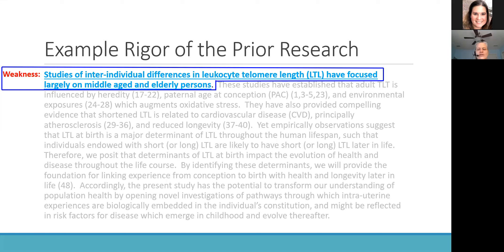They start off the paragraph with an inherent weakness in the rigor of the prior research: prior research on telomere length is focused predominantly on adults, specifically middle-aged and elderly adults. They were interested in the impact of telomere length at birth on lifespan outcomes, so if all studies up to that point had been focused on middle-aged and older folks, they were clearly missing that aspect. That's the weakness they identify.